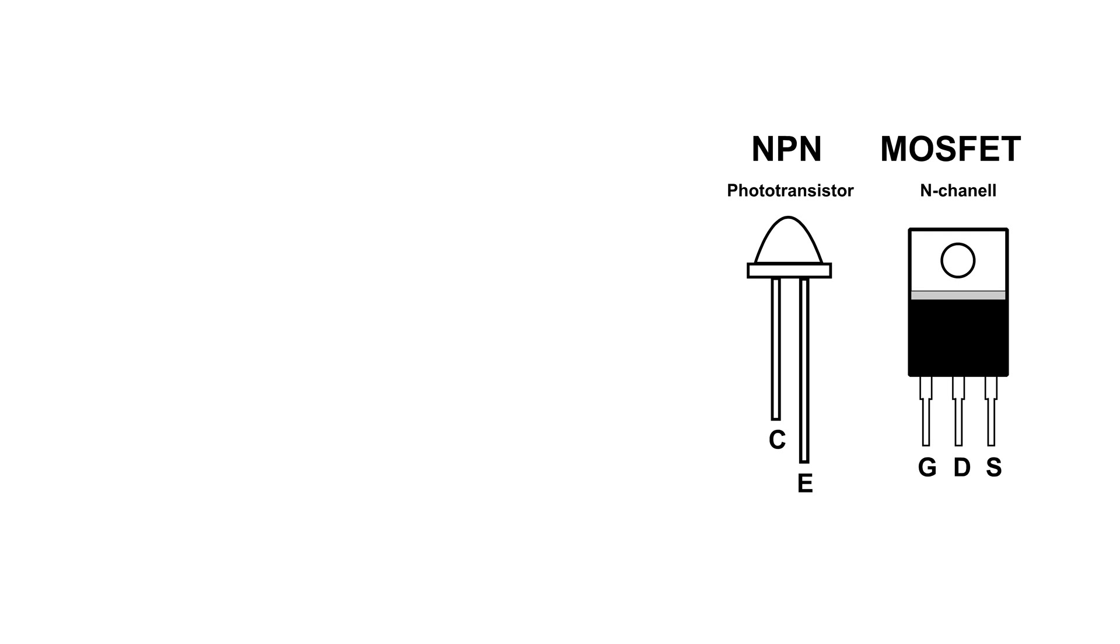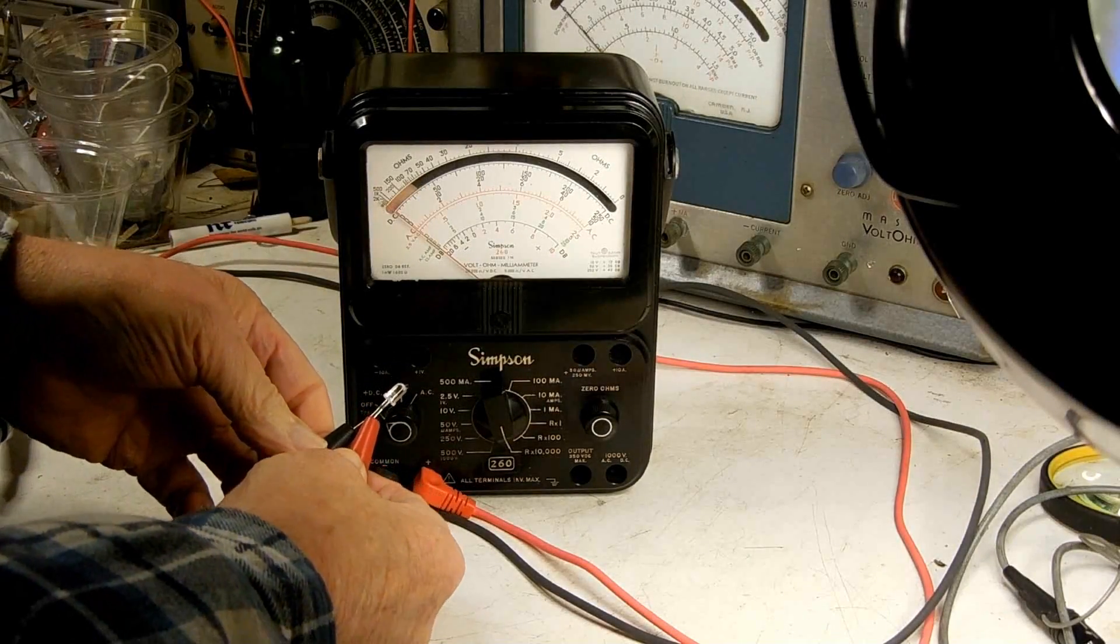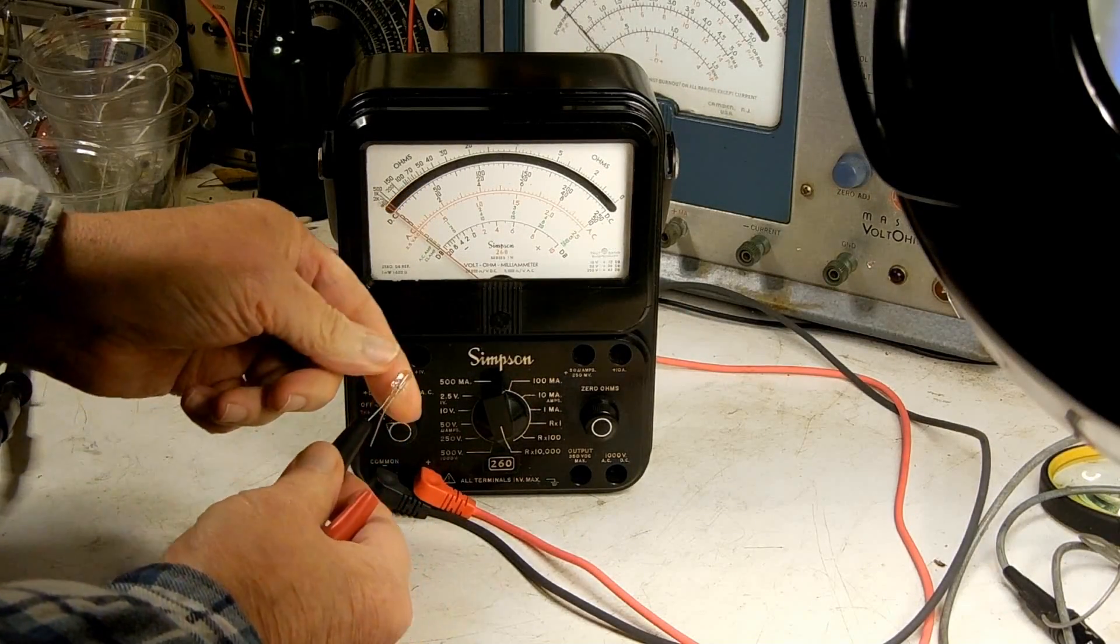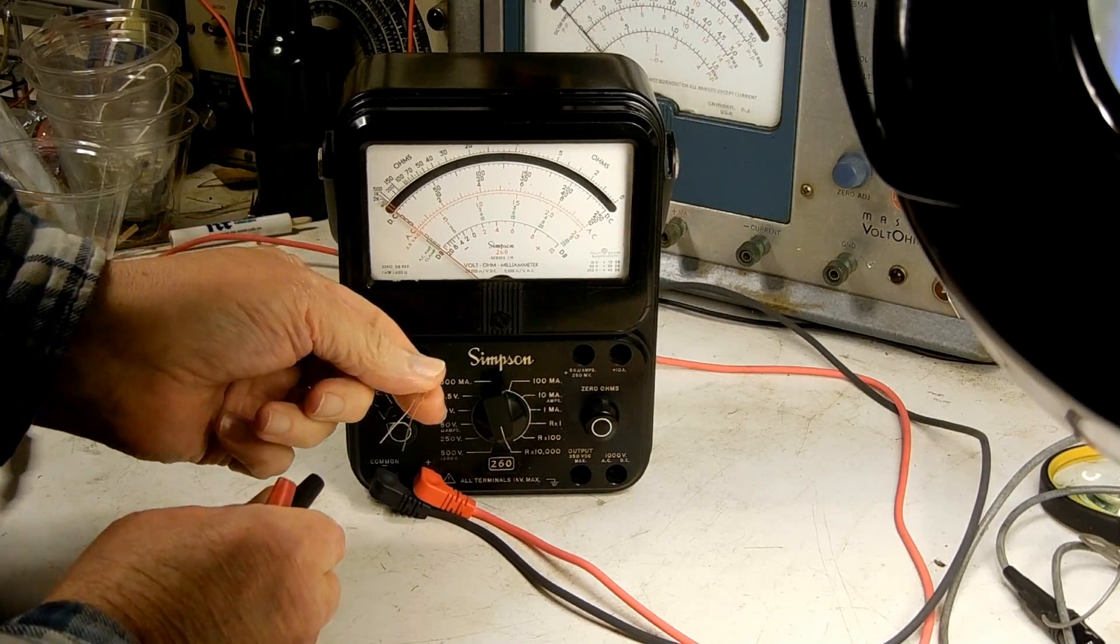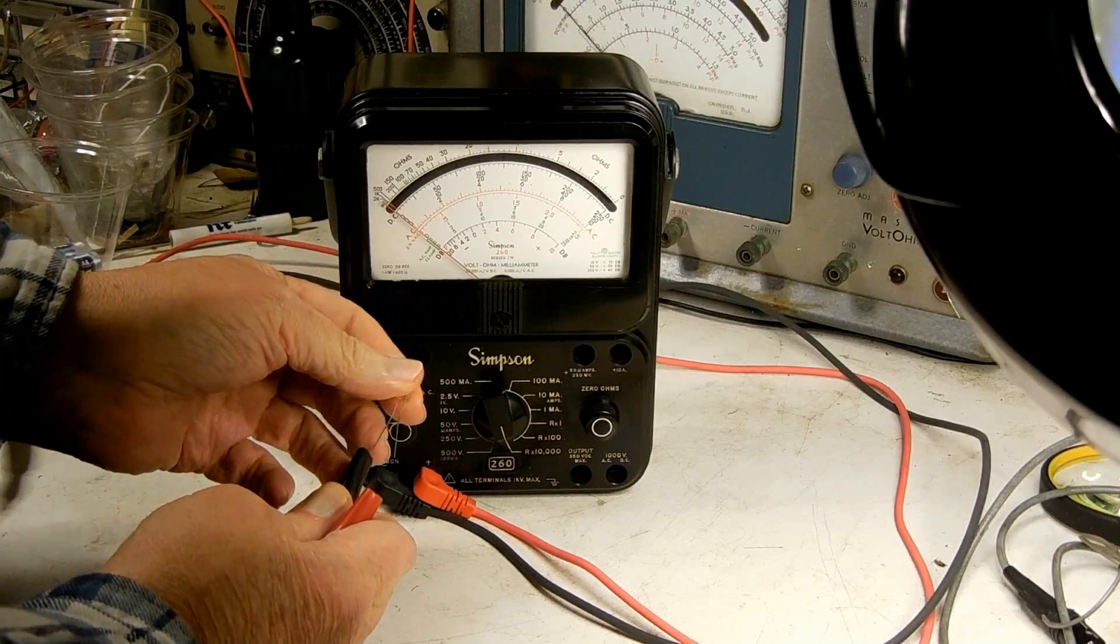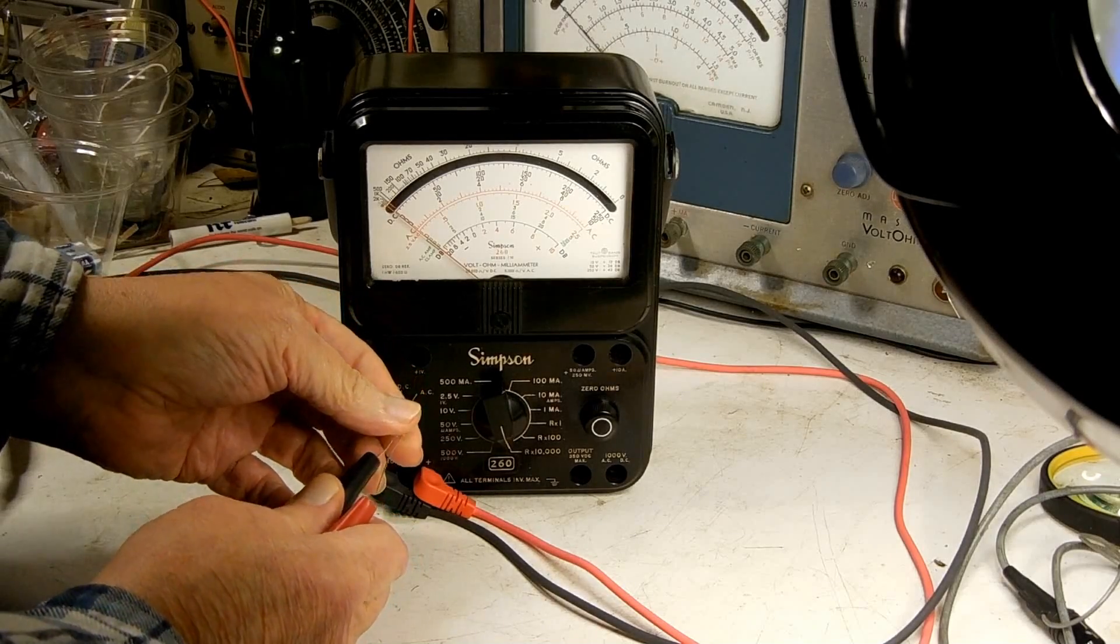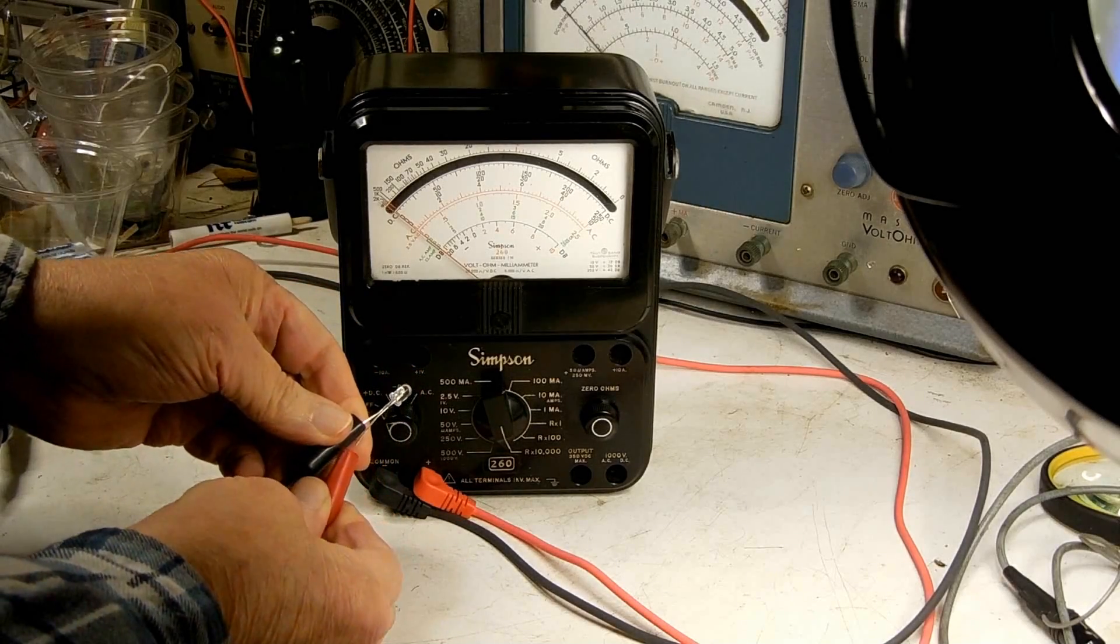Here I'm going to test the infrared phototransistor. The long lead is the negative lead and of course the shorter one is the positive.